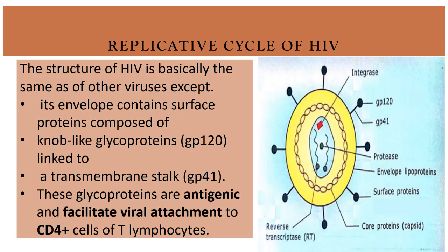The structure of the HIV virus is basically similar to other viruses, except HIV has an envelope containing surface proteins like glycoprotein 120 (gp120) and glycoprotein 41 (gp41). Glycoprotein 120 is the knob attached to the envelope, and between the knob and the envelope there is a stalk — that is glycoprotein 41 — which is antigenic and facilitates viral attachment to the CD4 cell of T-lymphocytes.